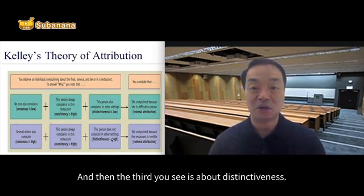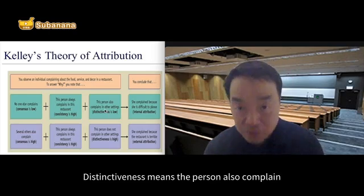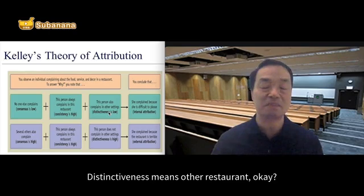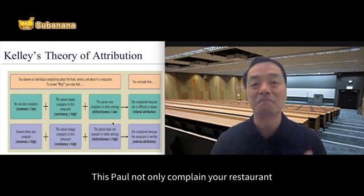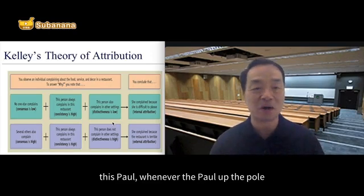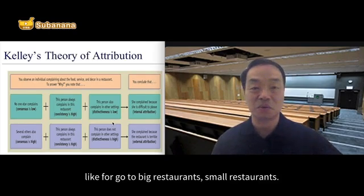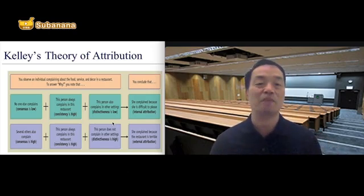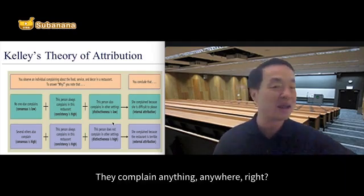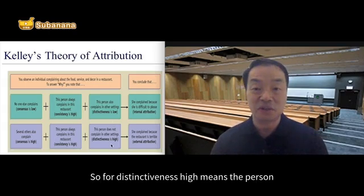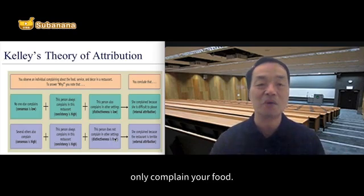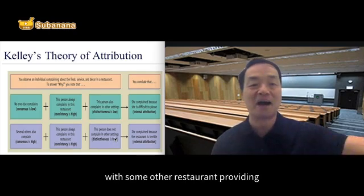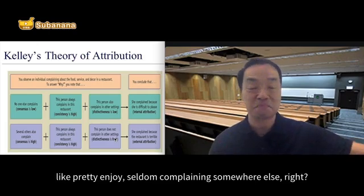The third component is distinctiveness. Distinctiveness means whether the person also complains in other settings — meaning other restaurants. If distinctiveness is low, that means the person also complains in other settings. Paul doesn't only complain at your restaurant — whenever Paul goes out dining, whether to a big or small restaurant, he complains. So distinctiveness being low means the person loves to complain anywhere, all the time. Distinctiveness high means the person does not complain in other settings — the customer only complains at your restaurant, and is satisfied and seldom complains somewhere else.